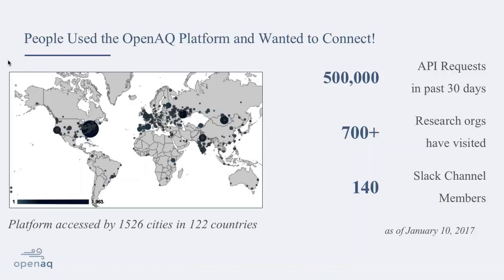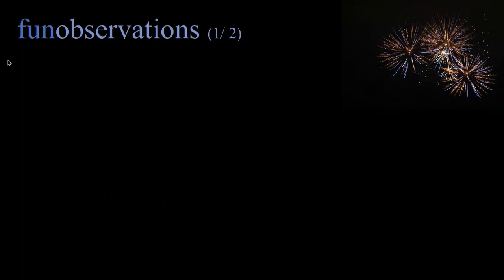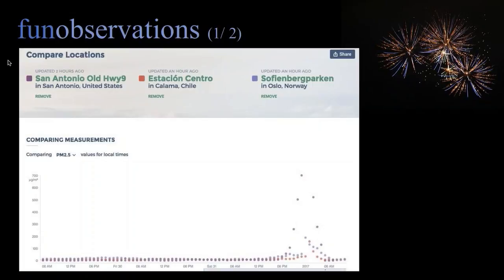I'll get into many uses people across the world are doing with our data, but first a couple of fun examples we've noticed lately. One was: at New Year's, would we see air quality change when fireworks went off? We checked in a few places just for fun. San Antonio apparently had really significant fireworks with a monitor very close by — this is PM2.5 levels and that peak is at midnight. We also saw it in Chile and Norway. A community member is actually making a visualization of fireworks across different time zones, seeing them go off at New Year's.